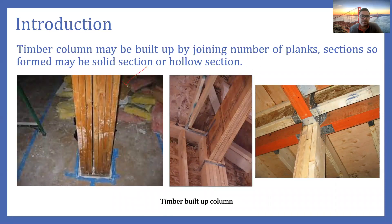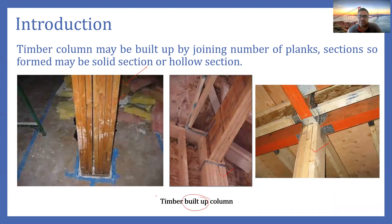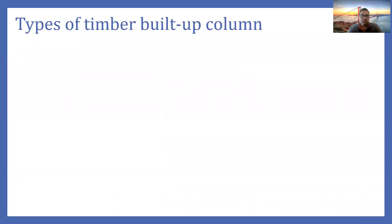Here you can see some examples of timber built-up columns. In the first diagram there are basically seven planks — this column is composed of seven planks. Similarly, in another case there are six planks, and another column is composed of four planks. A built-up column is mainly composed of two or more sections; if the material is timber, it becomes a timber built-up column.